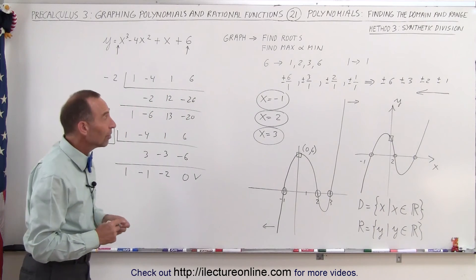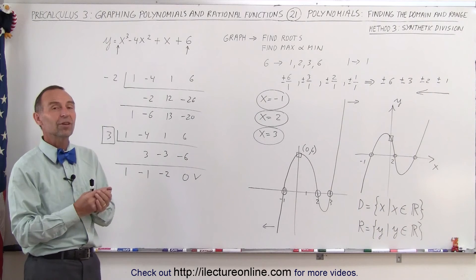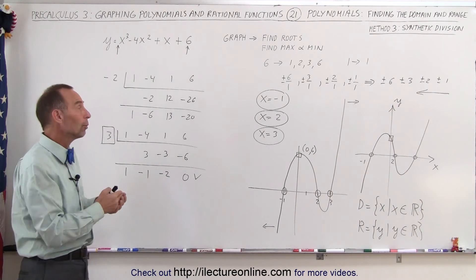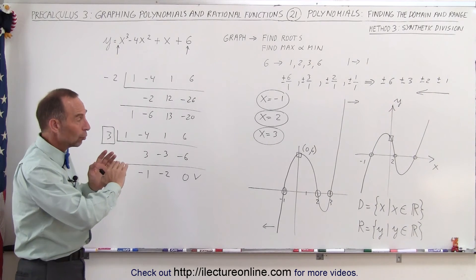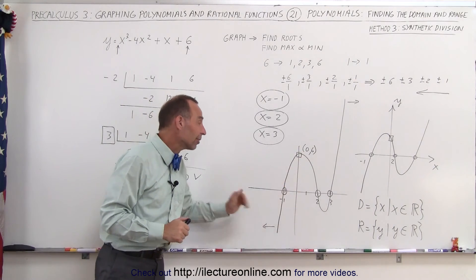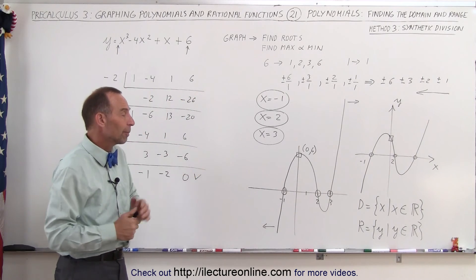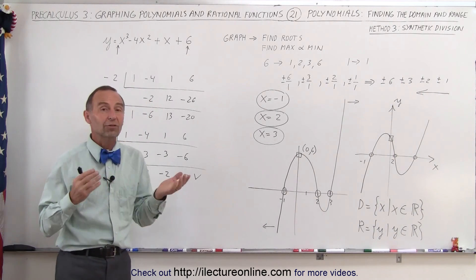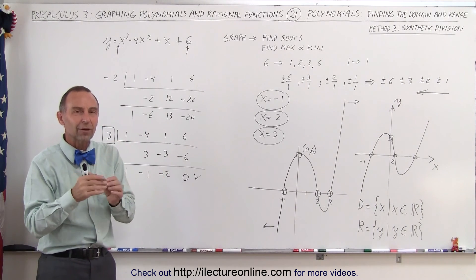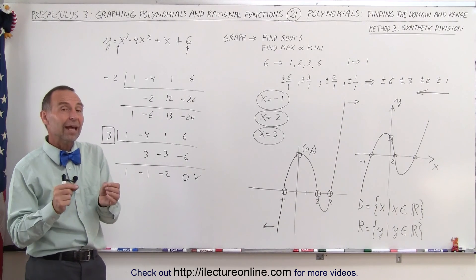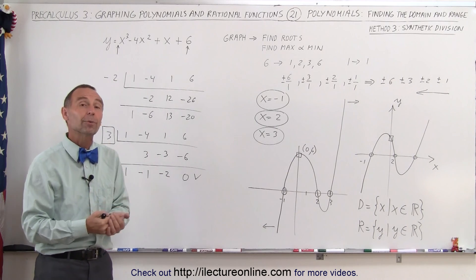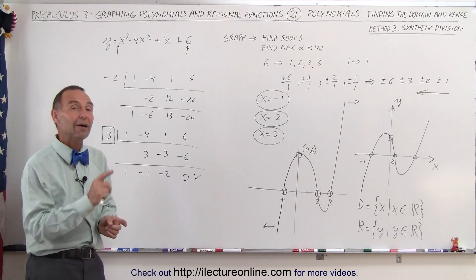These are fairly easy ones — we've put them up so you can see the technique. We have the method of factoring, the method of setting up a table of values, or we can use synthetic division. All these methods are used to find what the graph looks like, and then we can find the limiting values to determine the domain and range. It will become more tricky when we start doing rational functions, where you have asymptotes and prohibited values. But the general technique will be the same, and we'll apply it to more difficult problems.